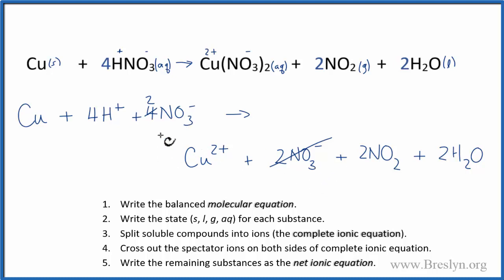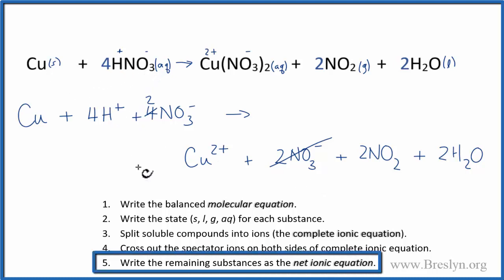This is the net ionic equation for copper plus nitric acid, Cu plus HNO3. Let's clean it up a little bit. And that's it.